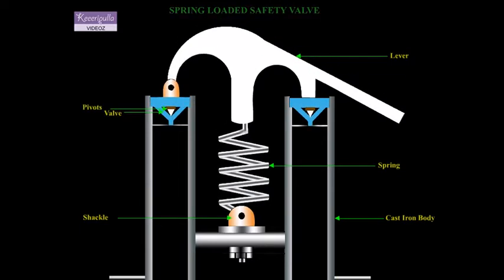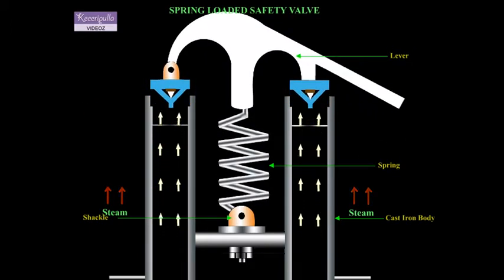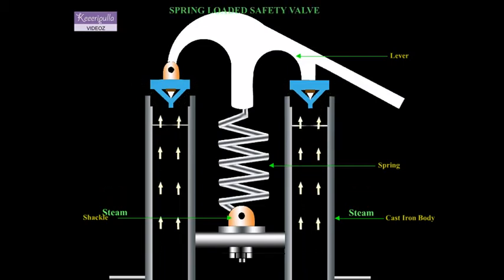It consists of a Y-shaped cast iron body having two limbs called the branch pipes, which have wall seats at their top. The two separate walls are placed over the wall seats.